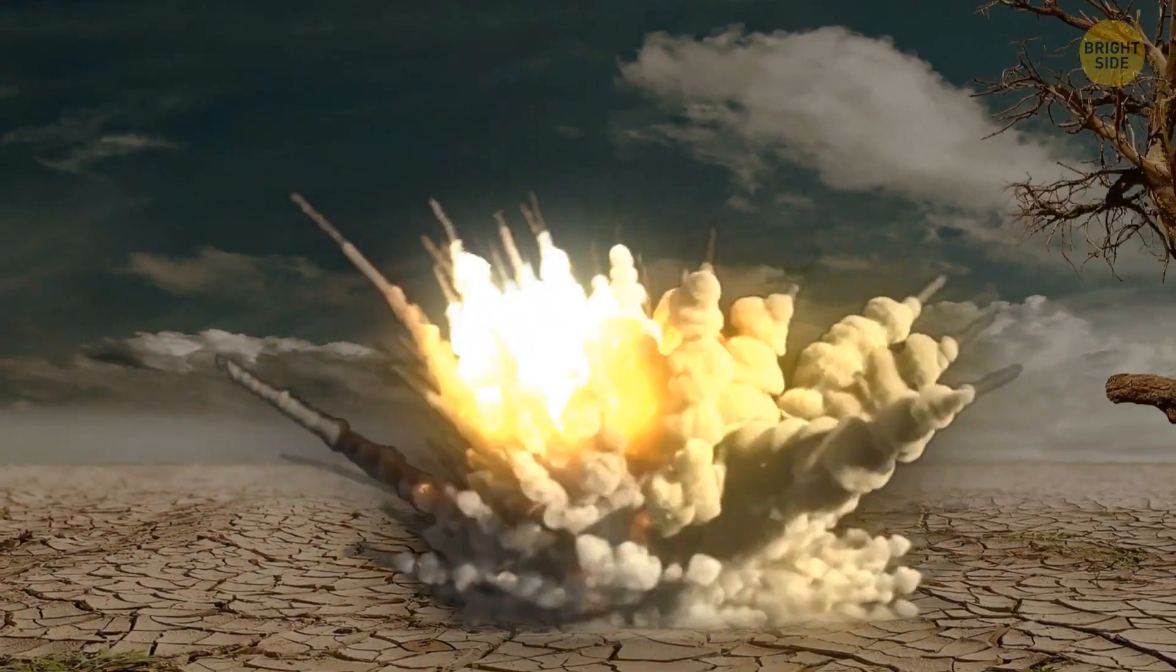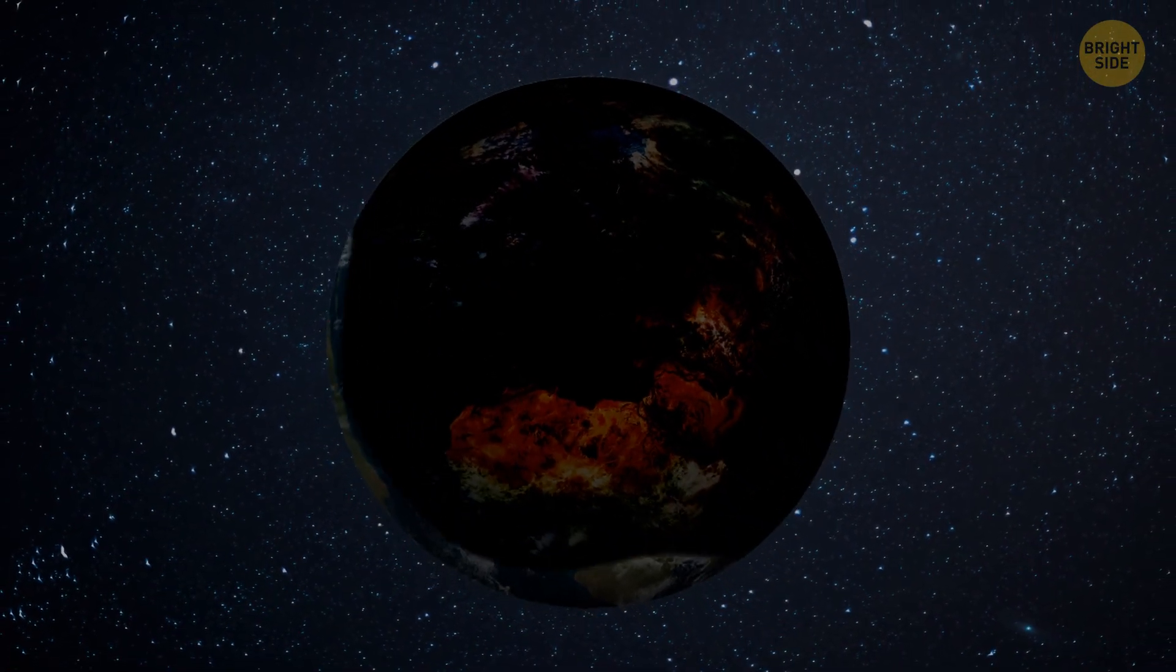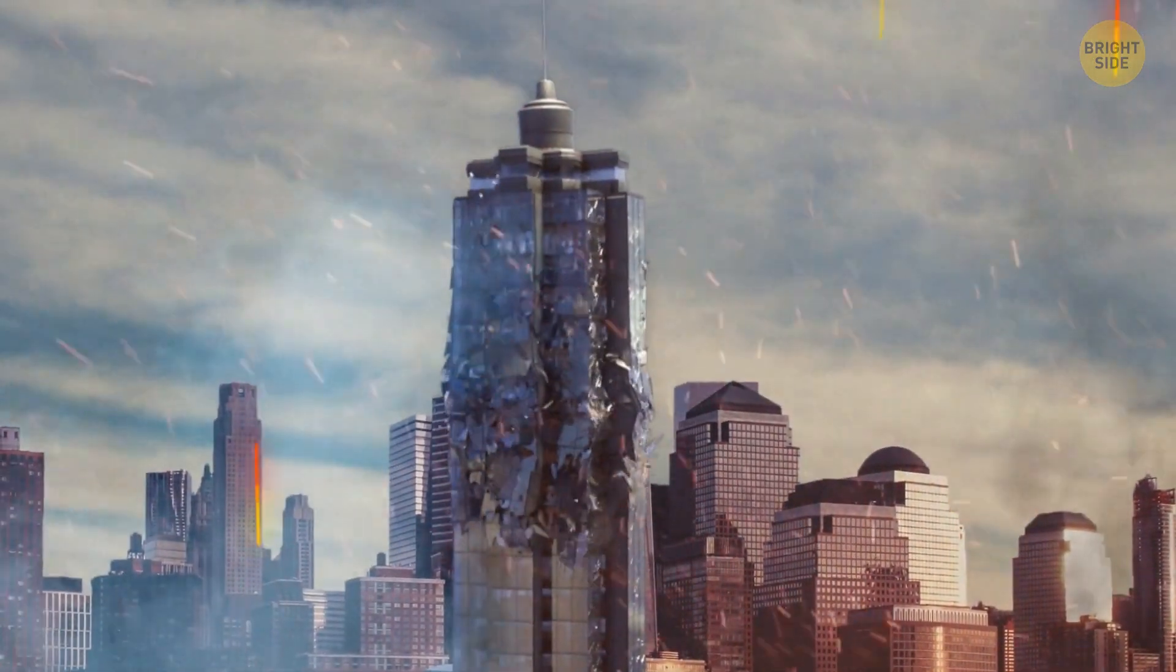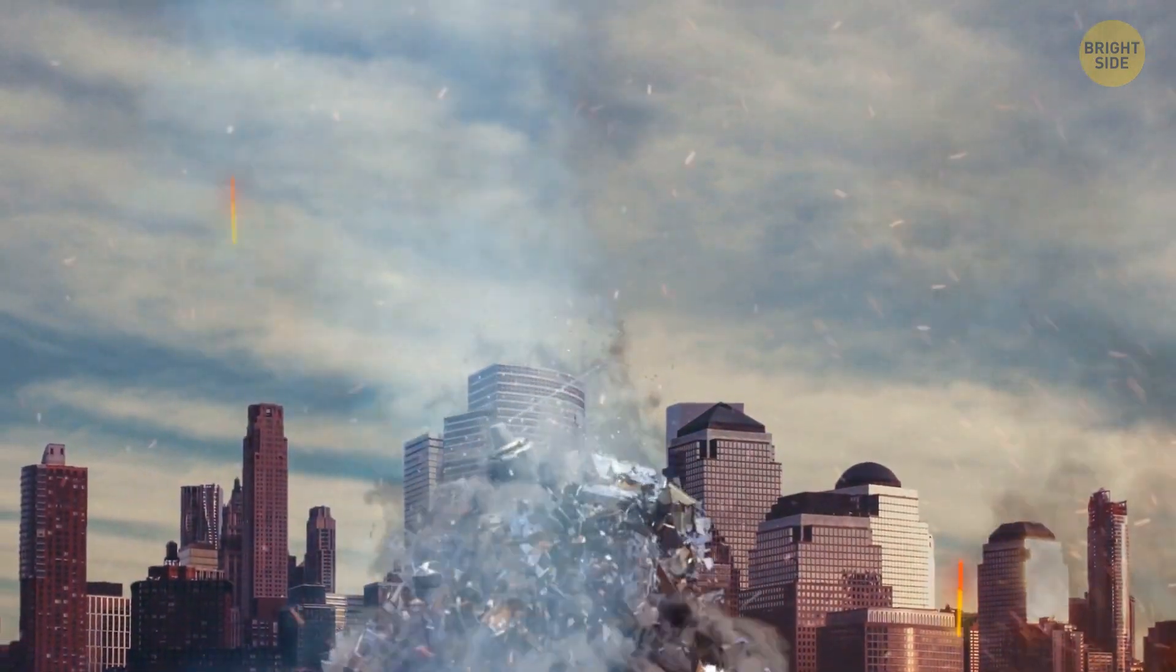After the impact, billions of tons of dust and ash would rise into the air. A giant black cloud would completely block the sun's rays. Earth would be plunged into darkness. All the debris in the air would start melting. They'd turn into liquid lava and fall back to the surface, causing even more damage.